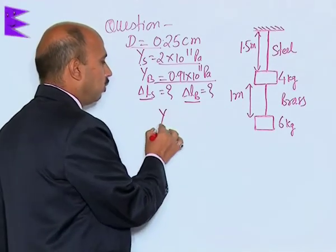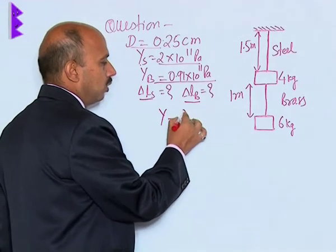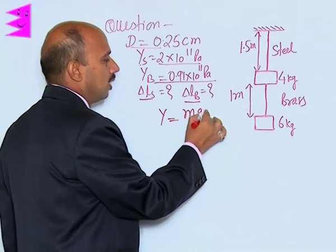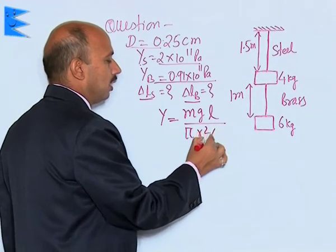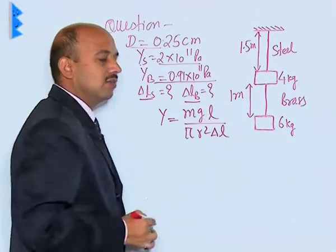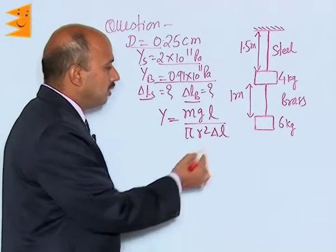The formula for Young's modulus is Y = mgL/(πr²ΔL), where ΔL is the increase in length. We have done this formula before.